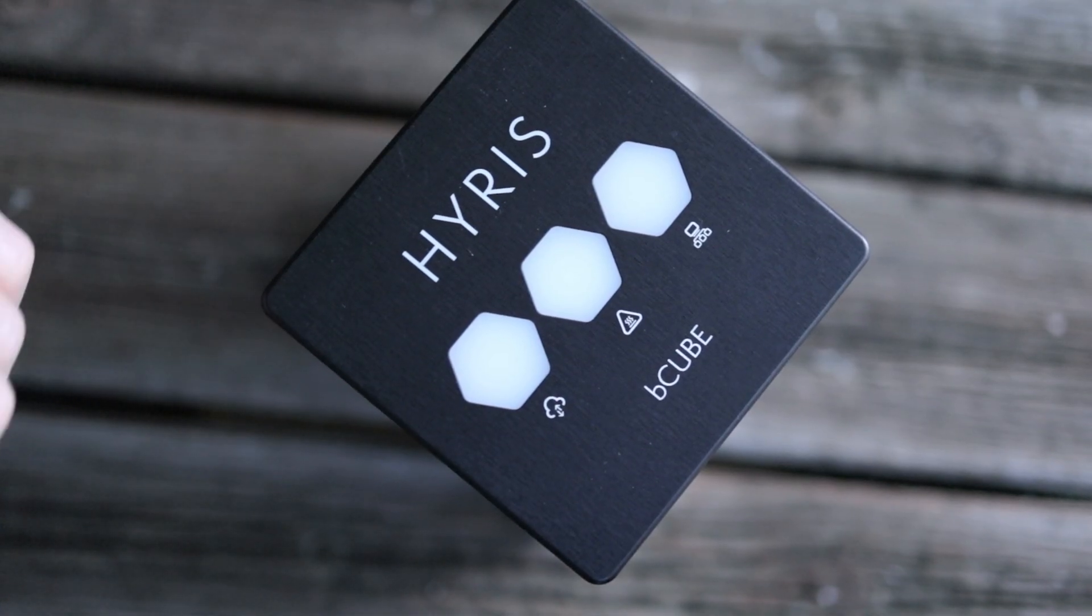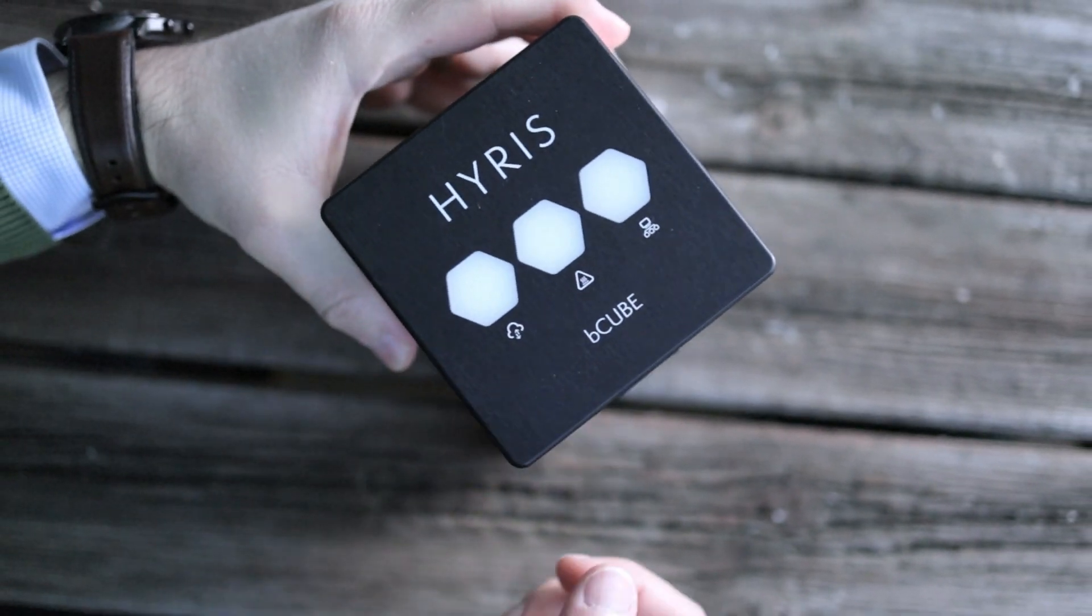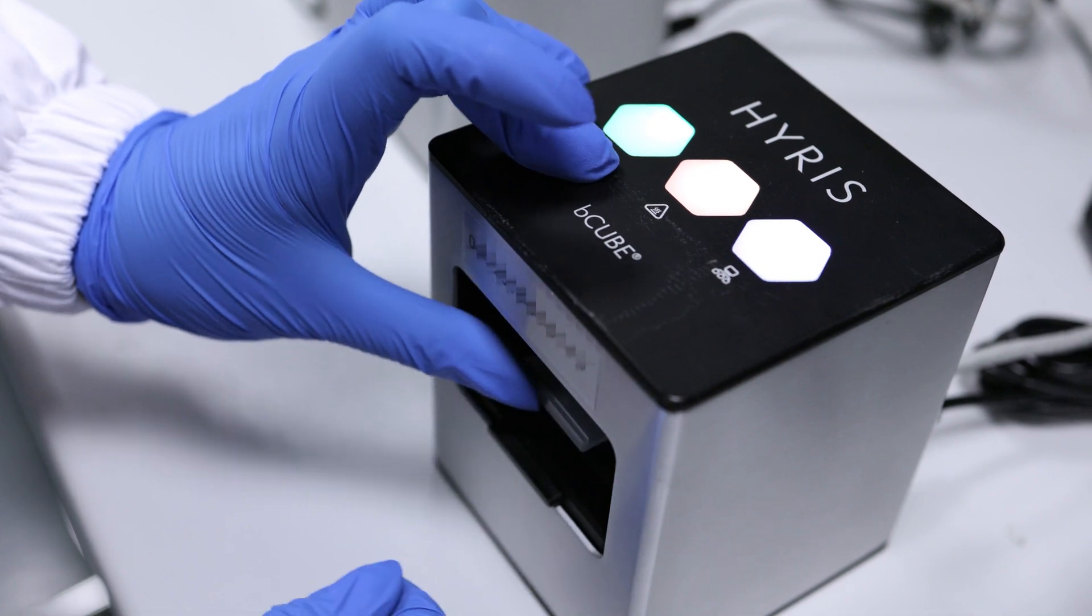The heart of the system is the HiRIS B-Cube, a miniaturized diagnostic device weighing less than one kilogram, which sits in the palm of one hand.